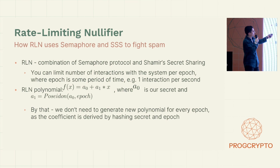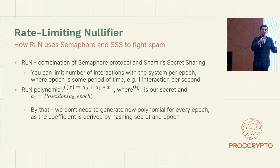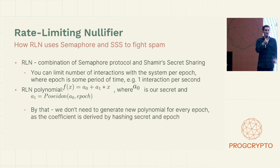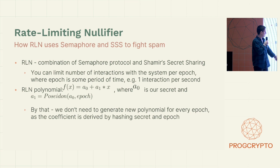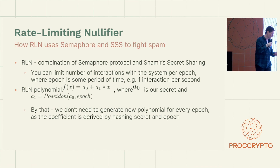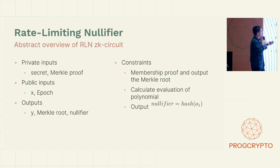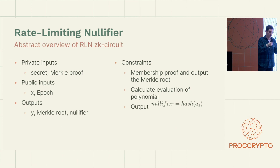The rate-limiting nullifier is a protocol that combines Semaphore and Shamir secret sharing scheme. The rule of RLN is that you can limit the number of interactions with the system per epoch, where an epoch is some period of time — for example, one interaction per second. The RLN polynomial F(X) is a linear polynomial where the free coefficient is our secret and the other coefficient is Poseidon hash of our secret and epoch. By doing this, we don't need to generate a new polynomial for every epoch. The abstract overview of RLN's ZK circuit is that we have a secret and Merkle proof as private inputs, X and epoch as public inputs, and we output Y share, Merkle root, and nullifier.